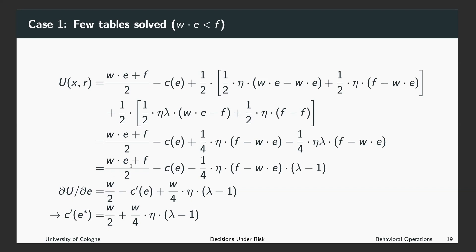Here, the derivative is just W over two, here the derivative is just C prime of E, and here the derivative is just one over four times eta times W times lambda minus one.